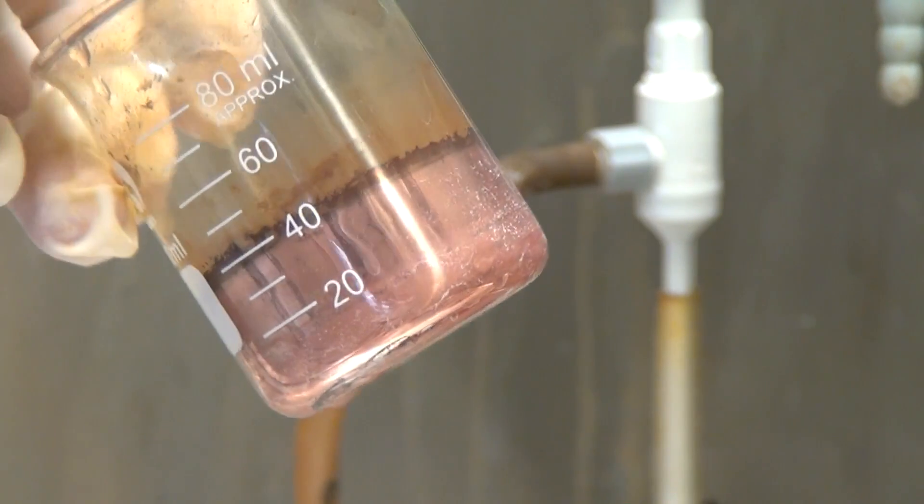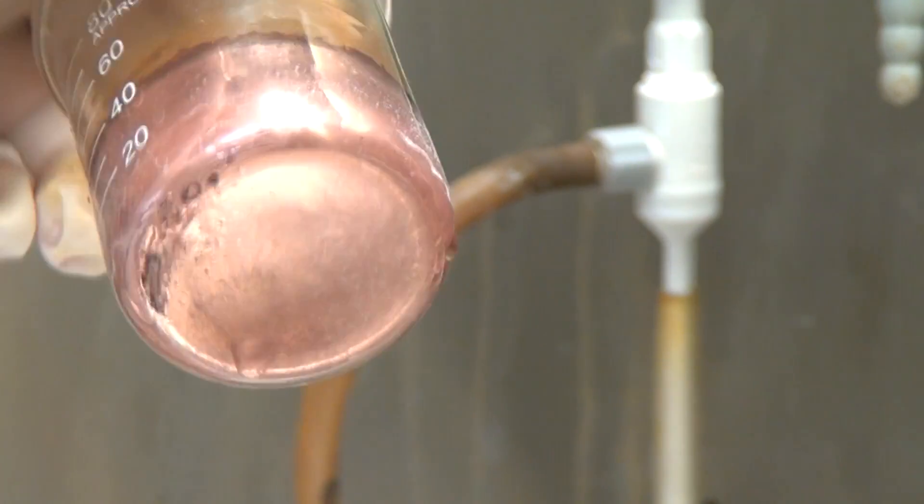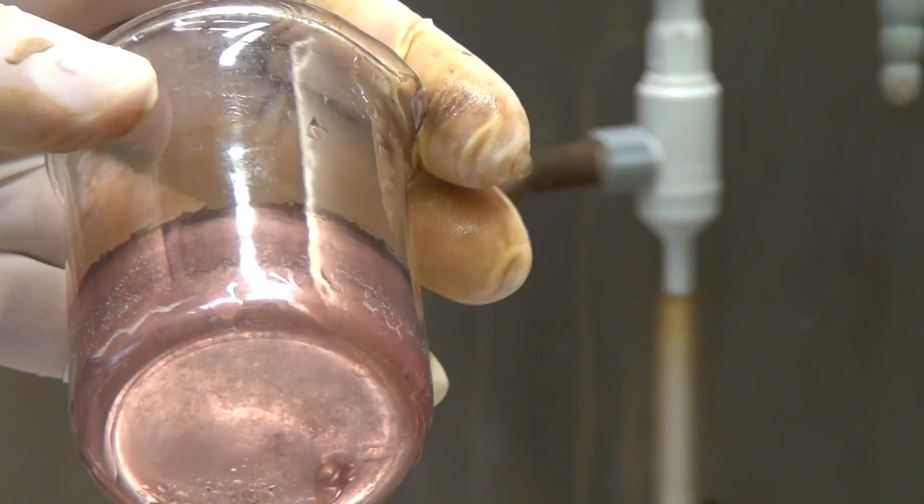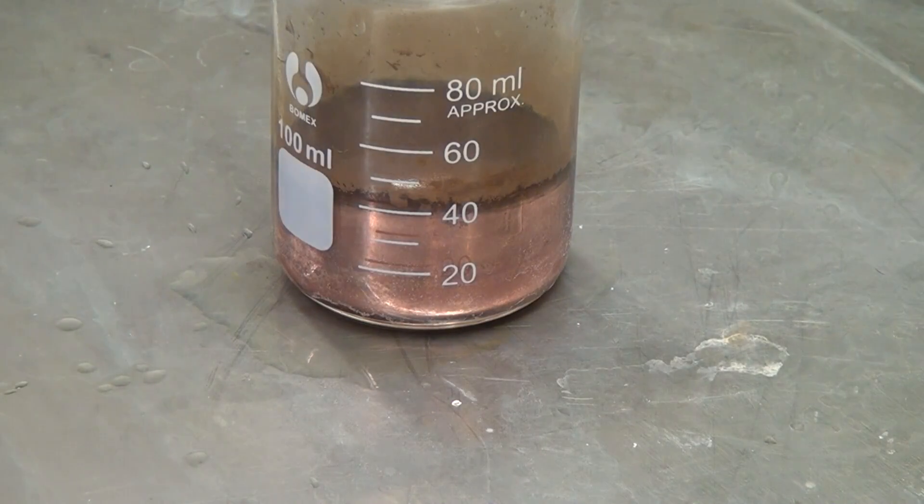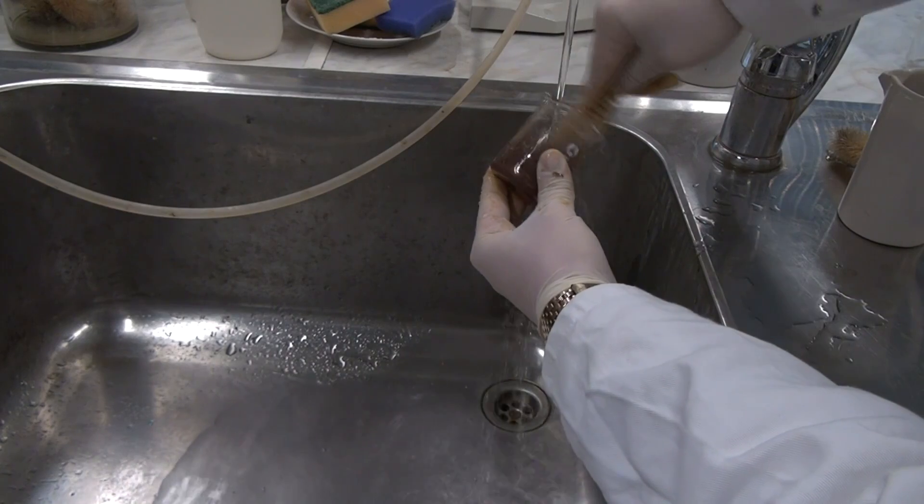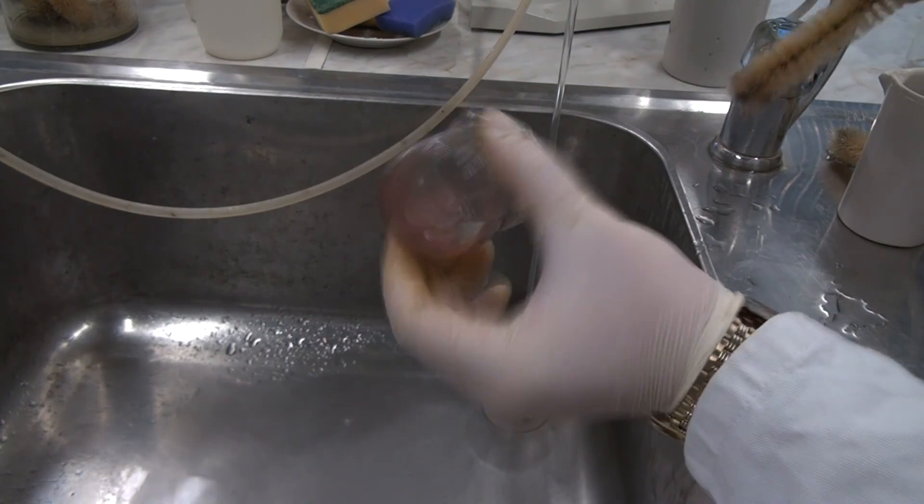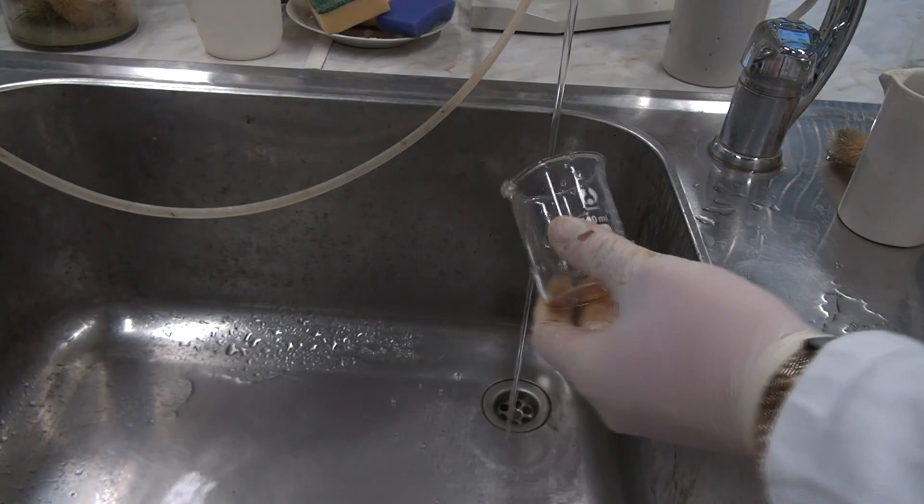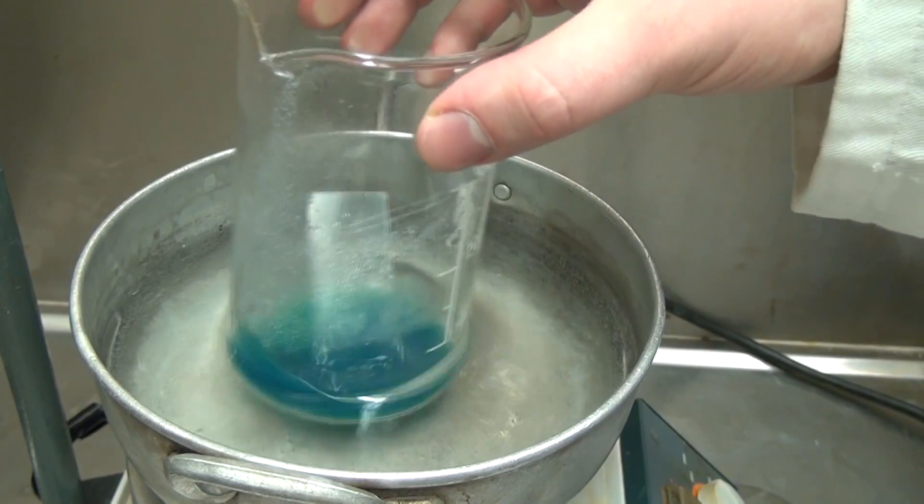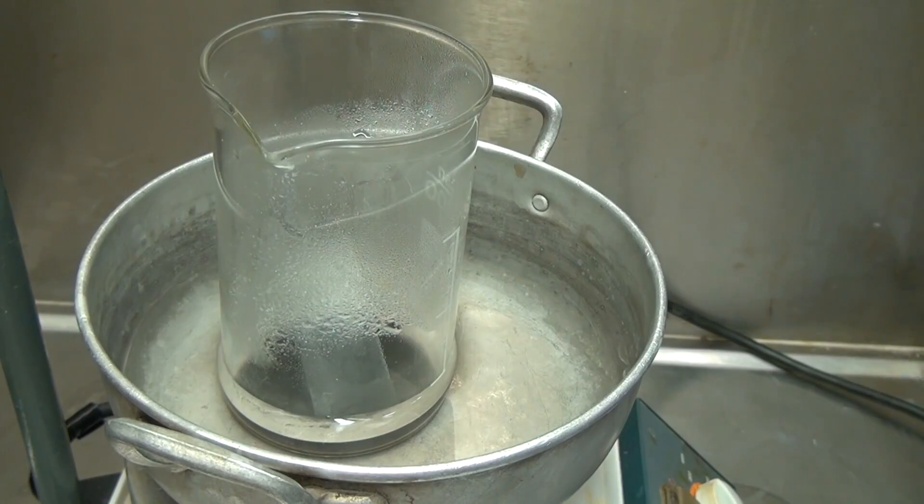The mirror resembles a silver mirror, the difference is that copper has a different color. However, the resulting layer of copper is quite fragile and can be easily washed off. Another method exists in which formaldehyde is used instead of hydrazine.